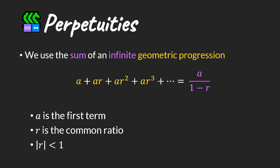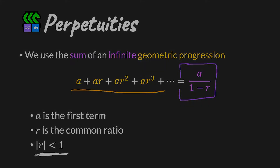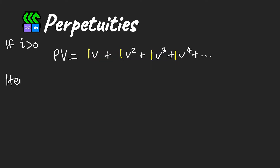To calculate the present value we use the sum of an infinite geometric progression. The formula has 'a' as the first term and 'r' as the common ratio — that is, if you take a term and divide it by the previous term you get the common ratio. An important note is that the absolute value of r must be less than one in order for the series to converge.